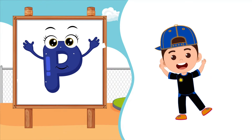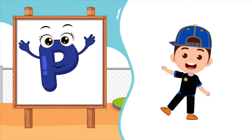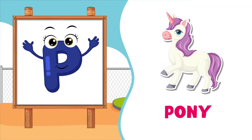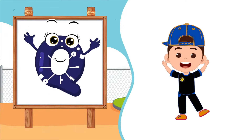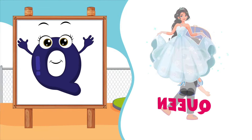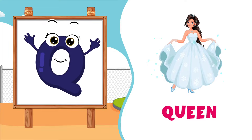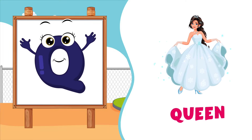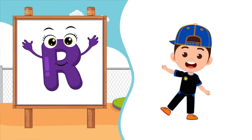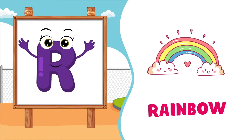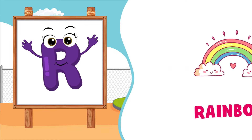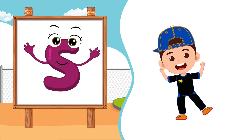P is for Pony, P-Pony, P-Pony. P, Pony. Q is for Queen, Q-Queen, Q-Queen. Q, Queen. R is for Rainbow, R-Rainbow, R-Rainbow. R, Rainbow.